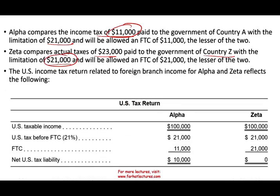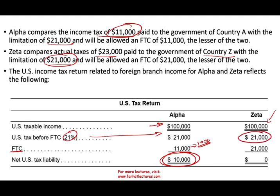Alpha's U.S. taxable income is $100,000; U.S. tax is $21,000; credit is $11,000; net U.S. liability is $10,000. Alpha's effective combined rate is 21 percent (10 + 11). Zeta's U.S. taxable income is $100,000; U.S. tax is $21,000; credit is $21,000; net U.S. liability is zero. However, Zeta paid $23,000 overseas but only got credit for $21,000 — the $2,000 difference is called excess foreign tax credit, and we'll talk about what to do with it.